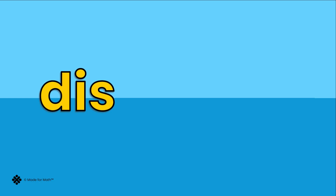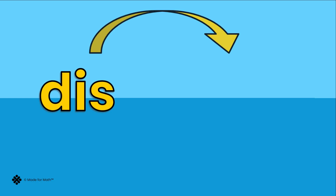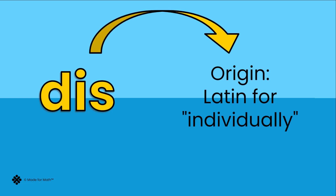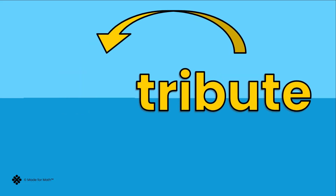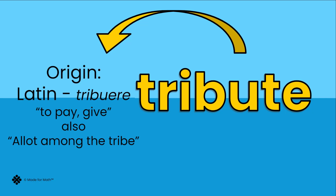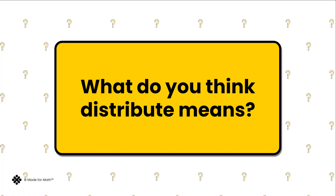Distribute. Dis comes from Latin origins for individually. Tribute comes from Latin meaning to pay or give, but also from tribus meaning a lot among the tribe. What do you think distribute means?